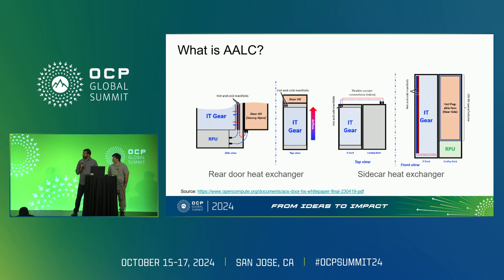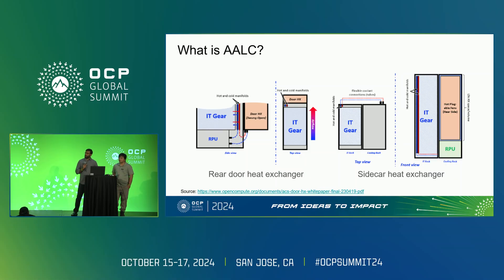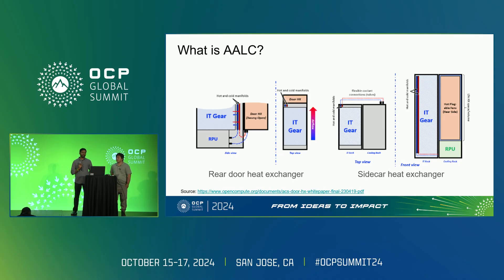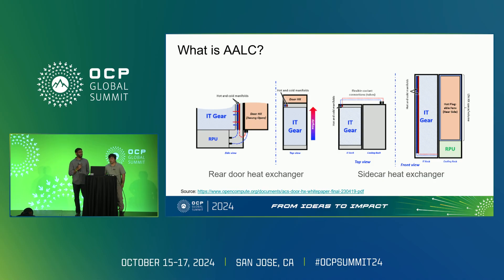As you see on the left side, you have a rear door heat exchanger where the heat exchanger is on the back of the server rack, taking the air from servers and cooling the liquid from the IT hardware, in turn releasing that heat to the facility air. Whereas in Sidecar, your heat exchanger is next to the IT rack, giving you more space, which comes with more capacity to handle higher heat loads.